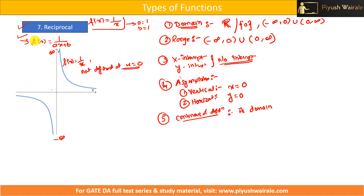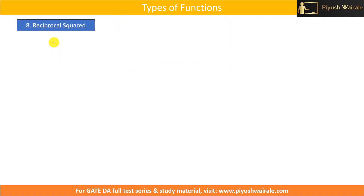The reciprocal function can be represented as f(x) = 1/(ax + b). We will also visualize the graph and see how the nature of the graph changes if we change the values of a and b. But before that, let us discuss one more type — the reciprocal squared function. What is the reciprocal squared function? Suppose f(x) equals 1/x².